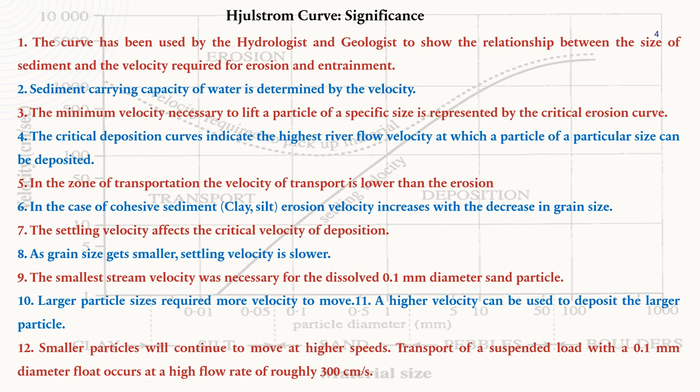In the zone of transportation, transport velocity is lower than erosion velocity. For cohesive sediment such as clay and silt, erosion velocity increases with a decrease in grain size. The settling velocity affects the critical velocity of deposition — as grain size gets smaller, settling velocity is lower. The smallest stream velocity necessary corresponds to a 0.1 millimeter diameter sand particle, while larger particle sizes require more velocity to move.